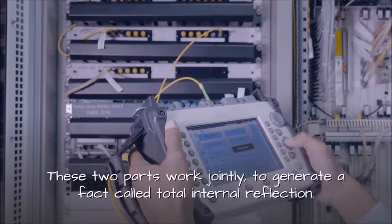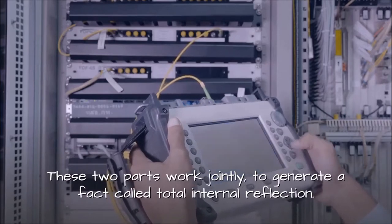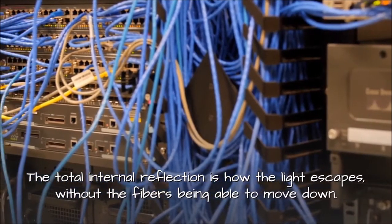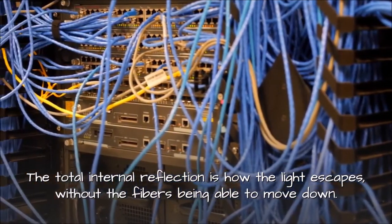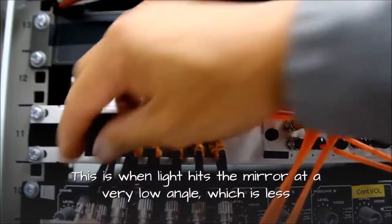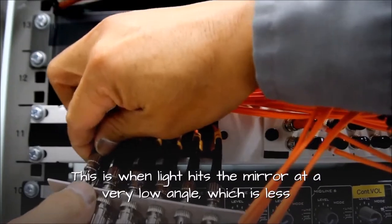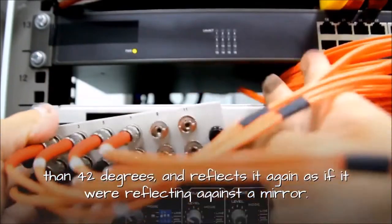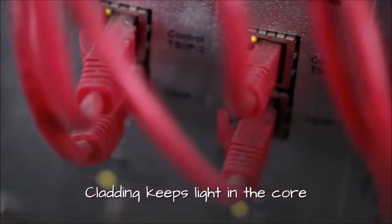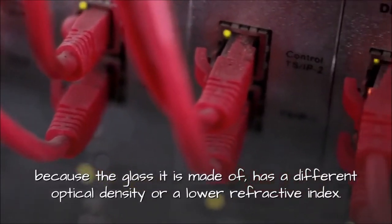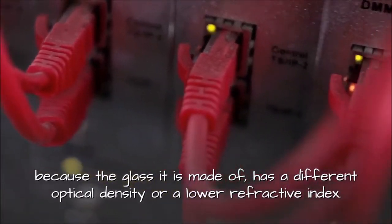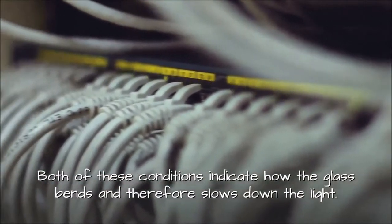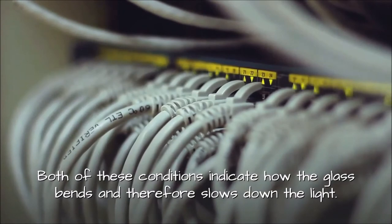These two parts work jointly to generate a phenomenon called total internal reflection. Total internal reflection is how the light travels without escaping the fibers. This occurs when light hits the boundary at a very low angle, less than 42 degrees, and reflects back as if against a mirror. Cladding keeps light in the core because the glass it is made of has a different optical density or lower refractive index. Both conditions determine how the glass bends and slows down the light.